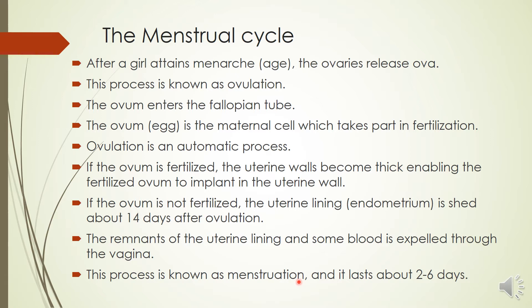Menstruation lasts about 2 to 6 days depending on the person. For some girls it is around 2, 3, or 4 days, but for some girls it goes on for about 1 week.